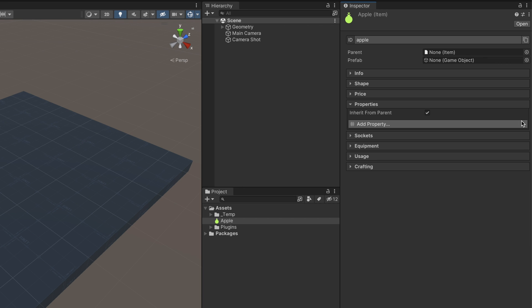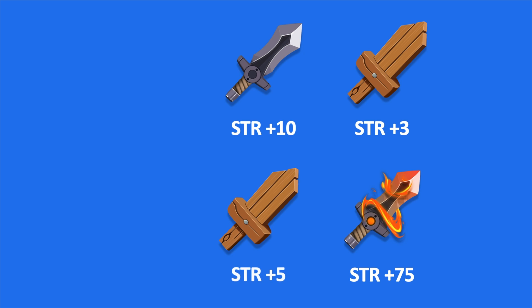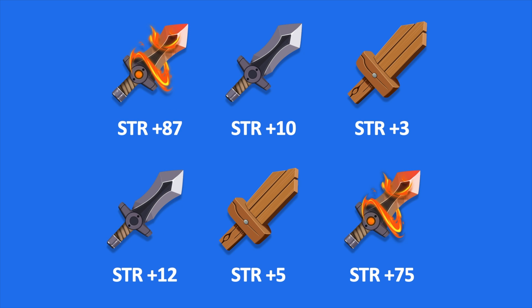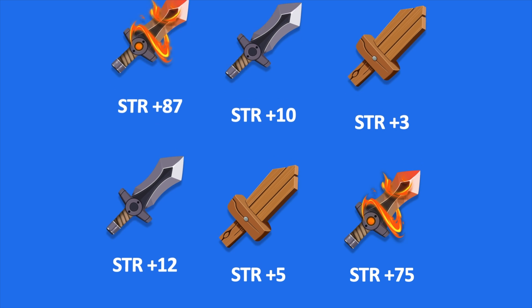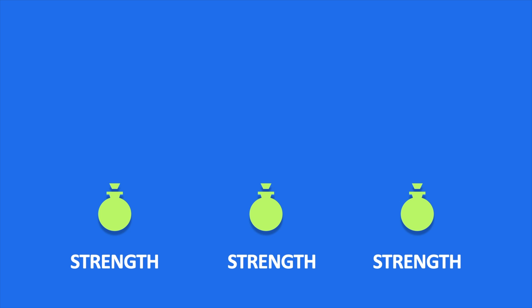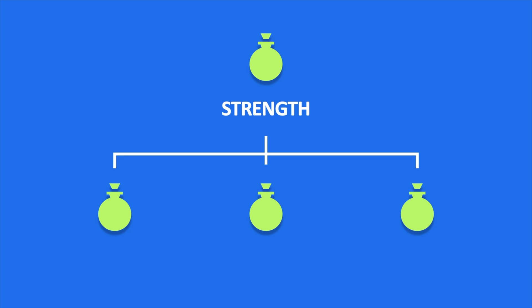Remember we said item inheritance is a key feature of items? This is where it shines the most. Imagine we are making an RPG game and it will have dozens if not hundreds of weapons. Each weapon increases the player's strength by a certain amount. We could create a property called Strength for each weapon and fill in the different strength values, names, colors, and sprites — but that would quickly become tedious. Instead, we can create the shared common property Strength on a parent item and, if necessary, override their value. And this does not only apply to the first parent, but all the way up to the root.